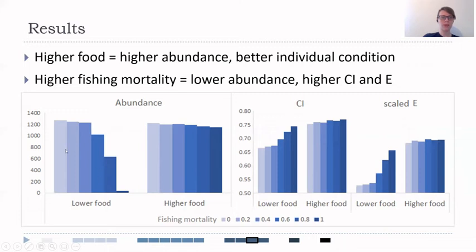But at a scenario at low food, as the fishing mortality increased, we could clearly see the decrease in the abundance, as well as increase in the condition index and the scaled energy reserve.